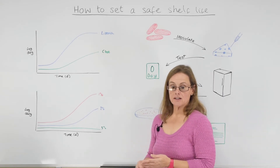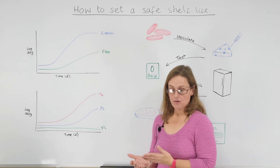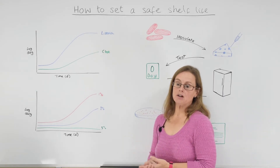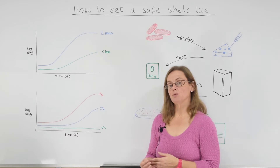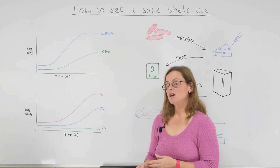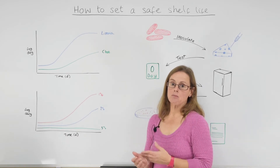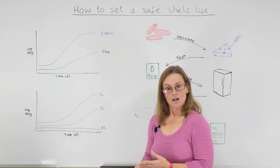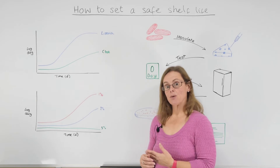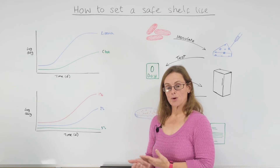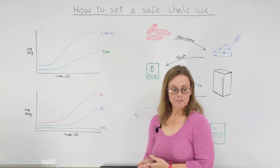So what we'd be looking at in terms of micro is how the spoilage organisms - ones that would naturally be present in most batches - and how they grow and affect the product's quality.